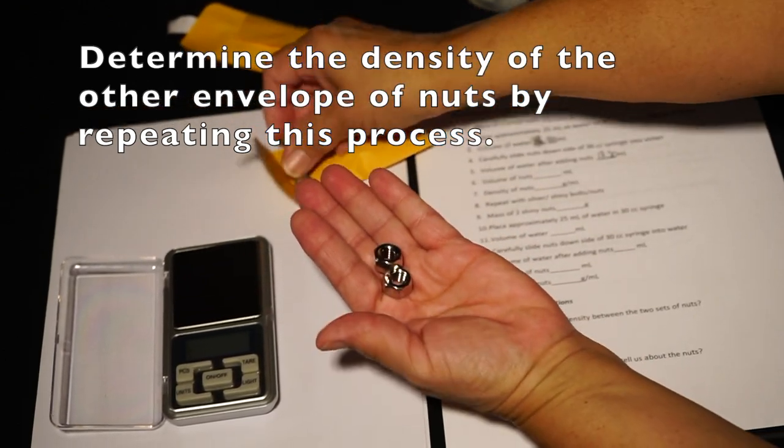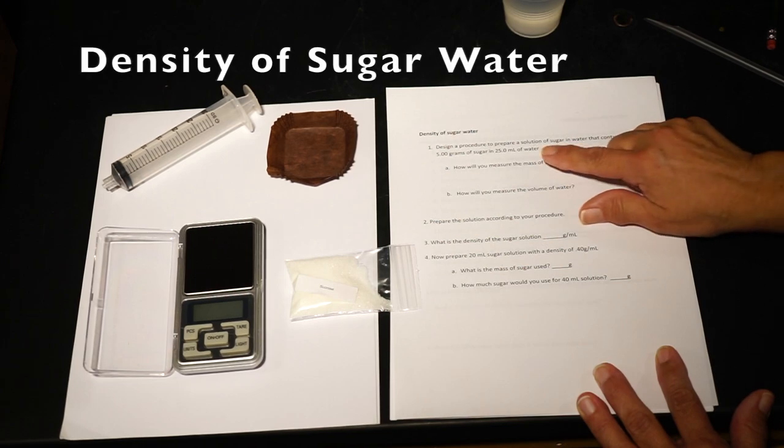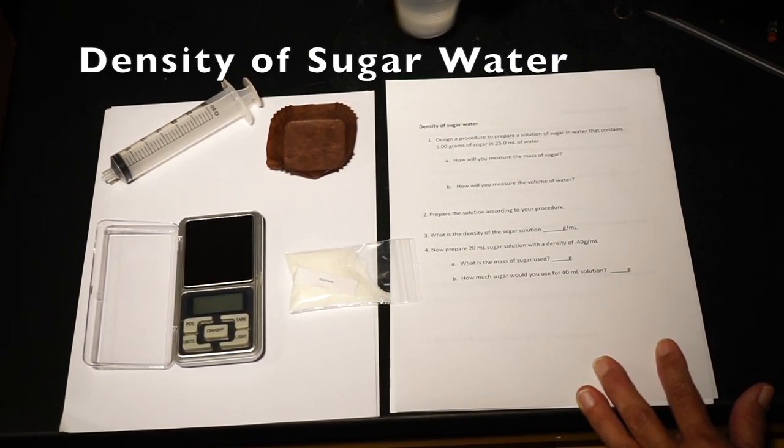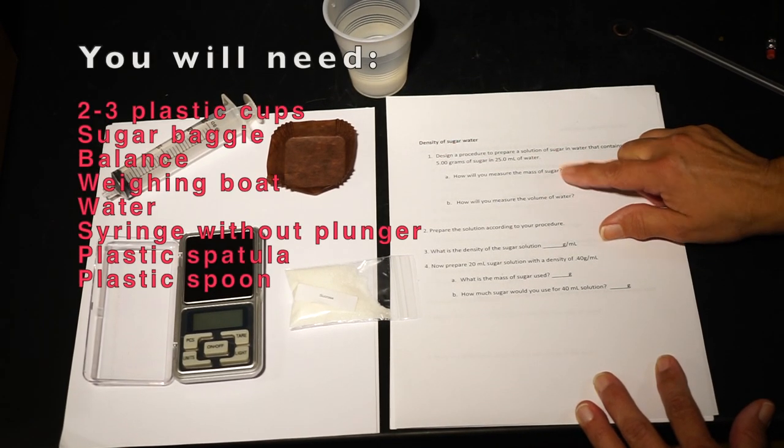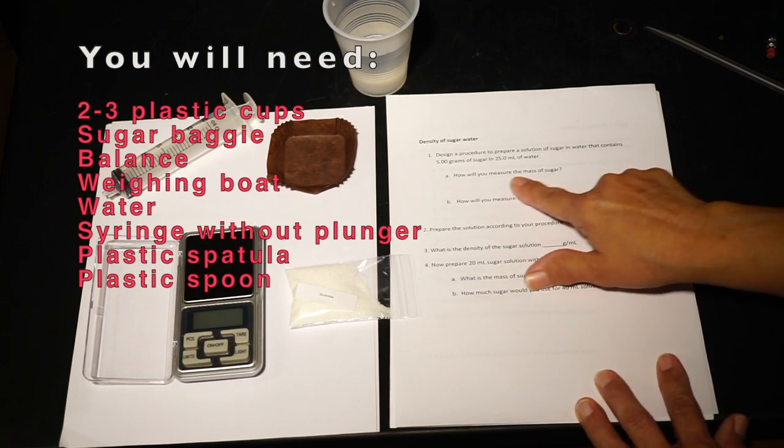Repeat this process for the other envelope of nuts. Density of sugar water: You will need two to three plastic cups, sugar baggie, balance, weighing boats, water, syringe without plunger, plastic spatula, and plastic spoon.